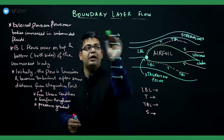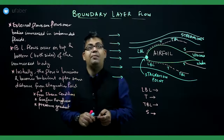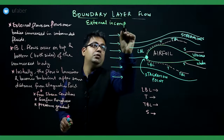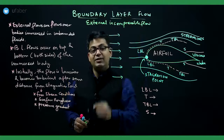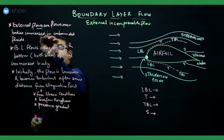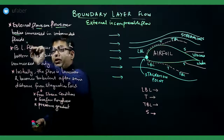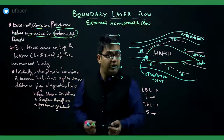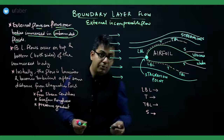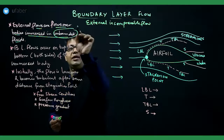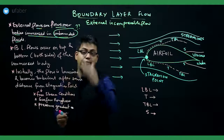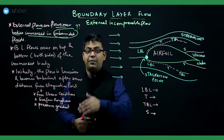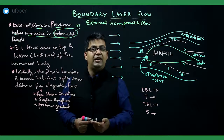Welcome to this video on boundary layer flow. Boundary layer flow is an external incompressible flow. External flows are flows over bodies which are immersed in unbounded fluids. An unbounded fluid is a fluid which is not constrained under certain boundaries — it is an infinite kind of fluid. For example, the atmospheric air is an unbounded fluid because it is not constrained in certain boundaries; it can flow from anywhere up till anywhere.